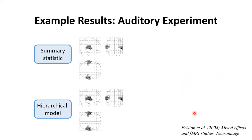Results from an auditory experiment show that the summary statistic approach and the hierarchical model give very similar results. Even though the hierarchical model is the gold standard, we don't actually use it very often because it's computationally slow — it puts all the data from all subjects into the model at the same time in an iterative procedure. With the summary statistic approach, we separate out first and second level estimates with no iteration, so it operates much more quickly. Given that in most cases we get the same results, and because the summary statistic approach is much more efficient, most people tend to use the summary approach in brain imaging.